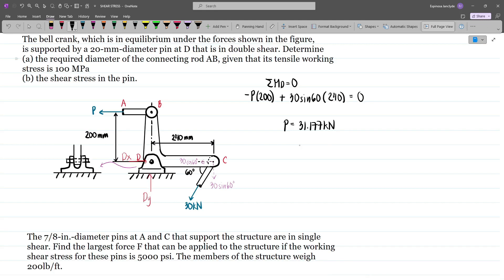Now we can solve letter A by considering the tensile working stress of 100 MPa. This is the perpendicular area, which is just a circular area. So we have 100 MPa or N/mm² equal to 31.177 divided by πd²/4.